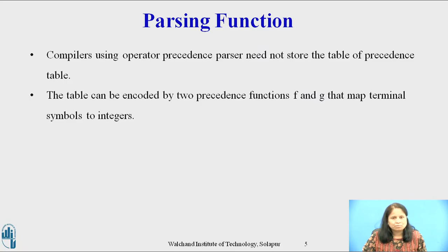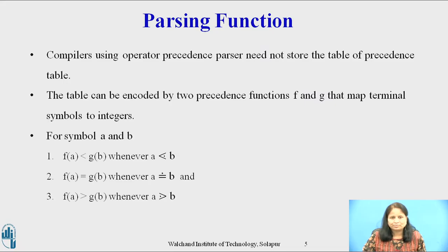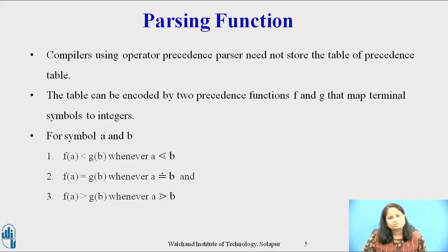Compilers using the operator precedence parser need not store the full table of precedence relations. The table can be encoded by two precedence functions f and g that map terminal symbols to integers. We define f and g for symbols a and b: f(a) < g(b) whenever a yields precedence to b; f(a) = g(b) whenever a has the same precedence as b; and f(a) > g(b) whenever a takes precedence over b.